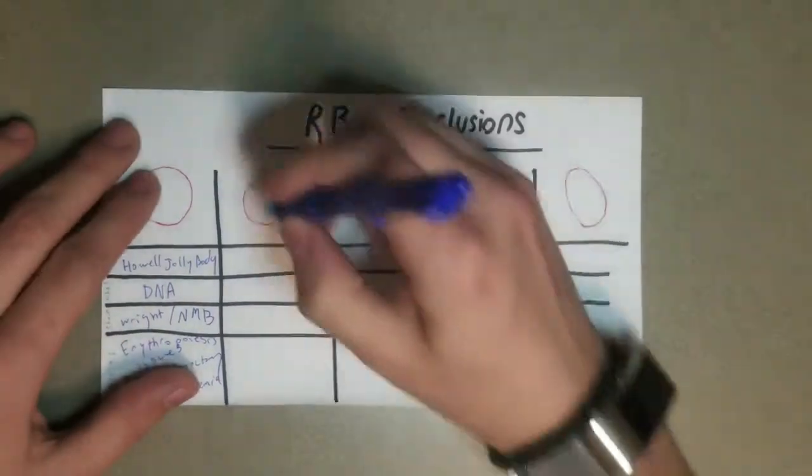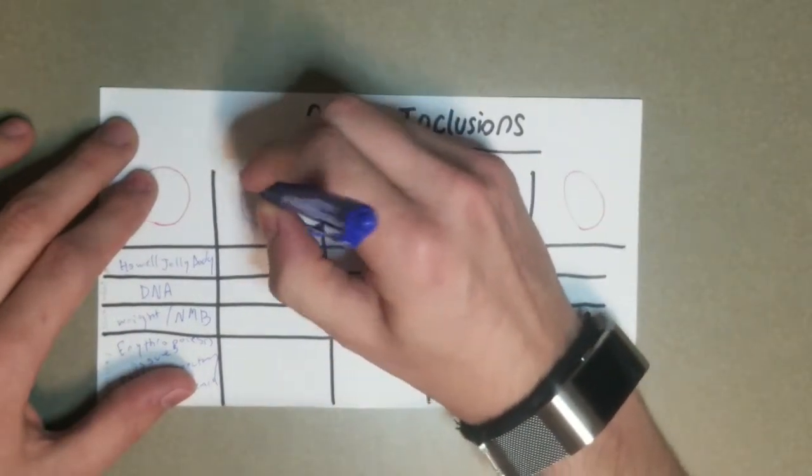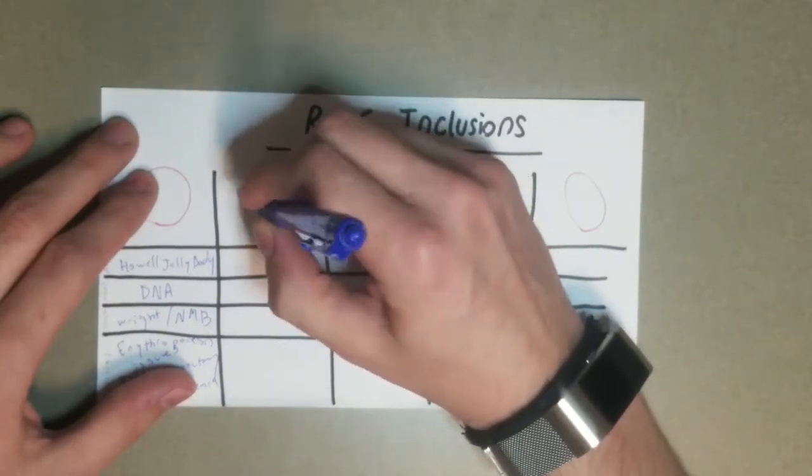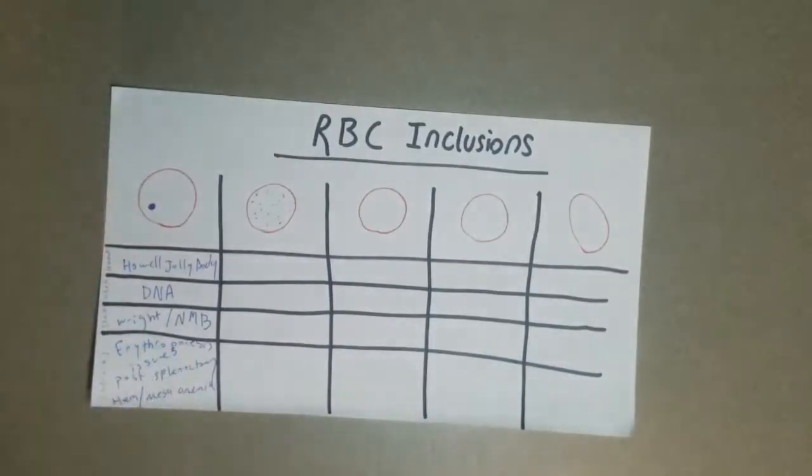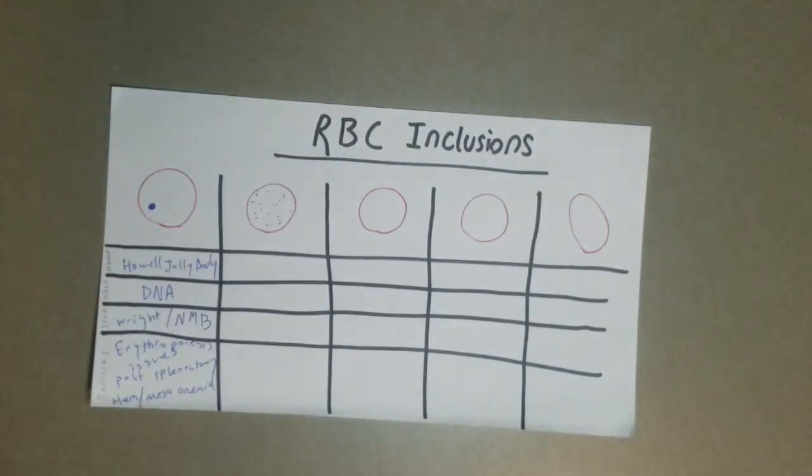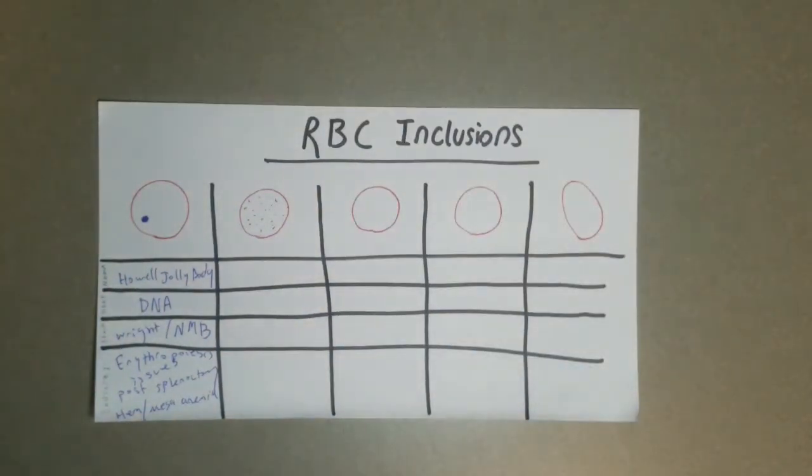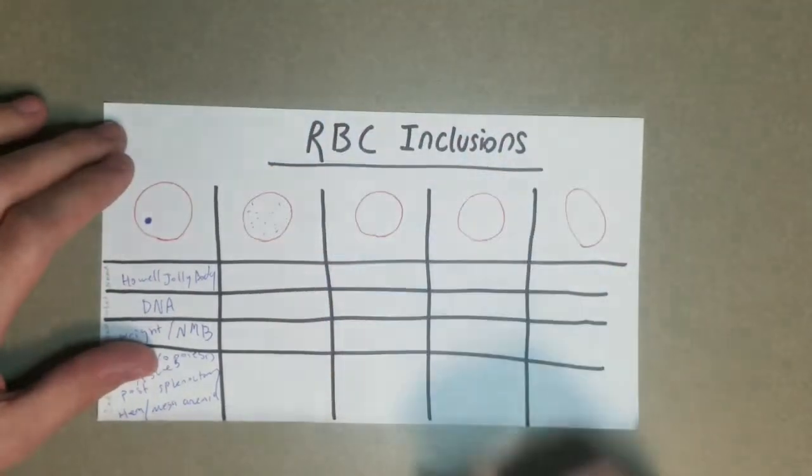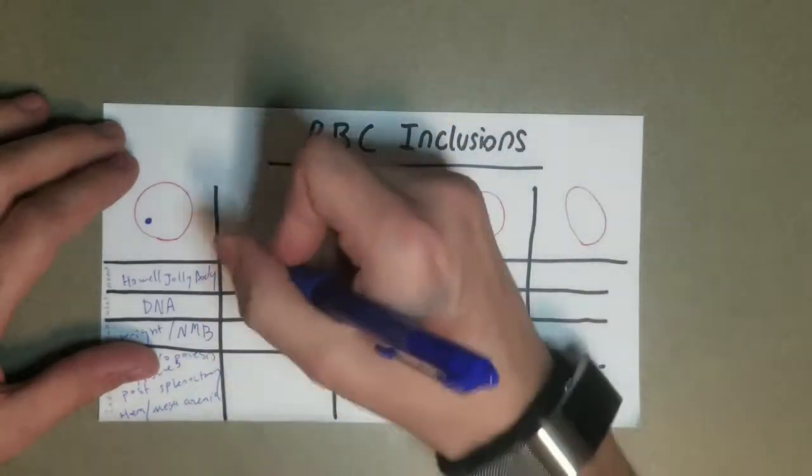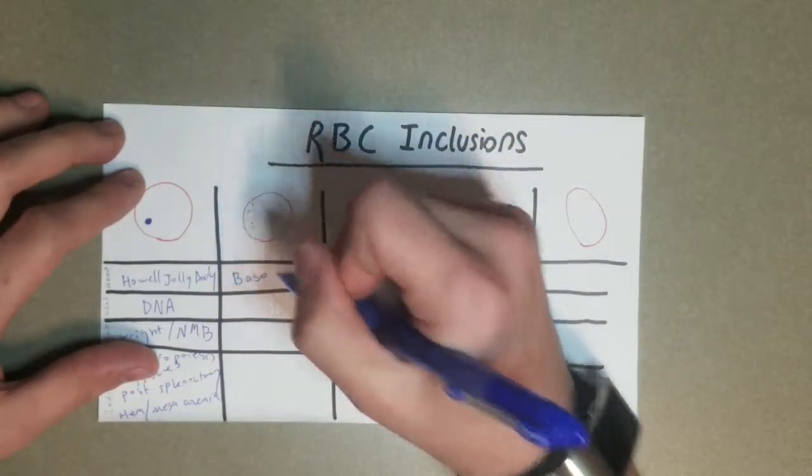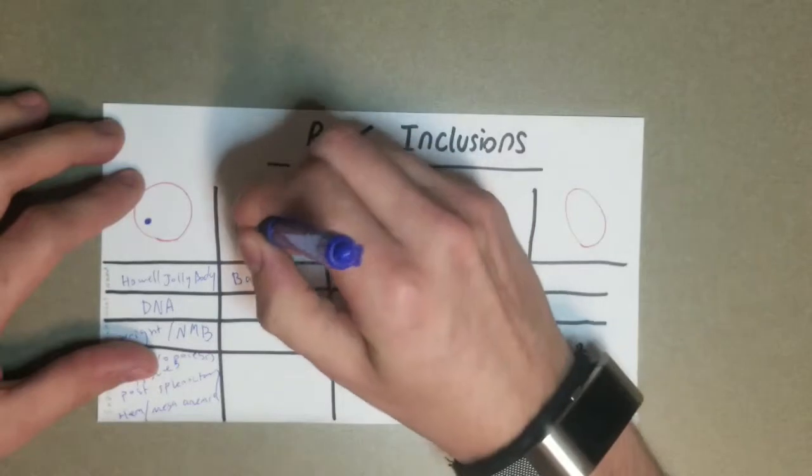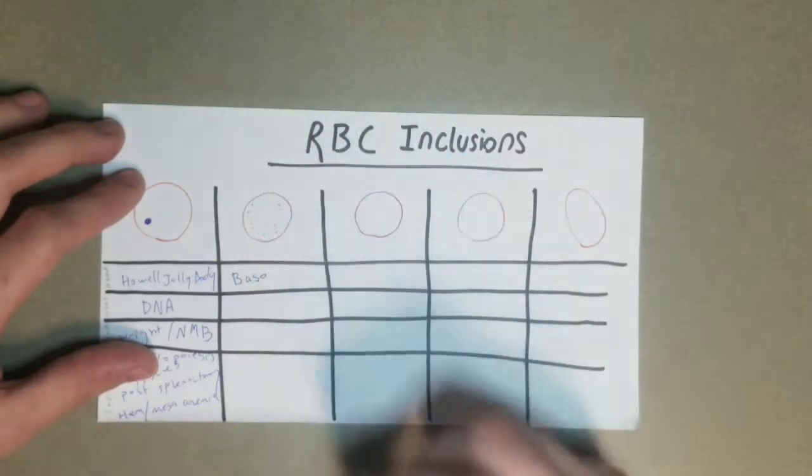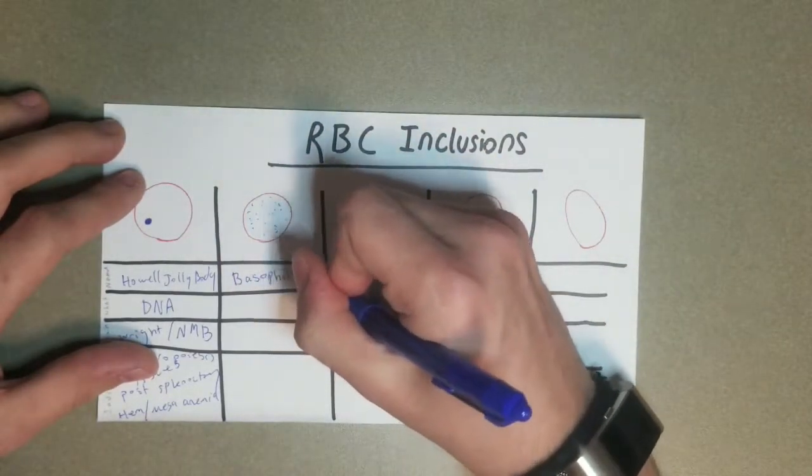So now we'll move on to the next one here. Take a guess at what this one is. This is basophilic stippling. Another word for it though is punctate basophilia. And that's kind of way less used of a term, but I like it because the word punctate means studded or denoting tiny dots or holes. And that's kind of what this looks like. Another way to remember it is it looks like someone just threw a whole bunch of punctuation. If you want to think about it that way, or like when you draw them, you're doing periods, periods, periods.